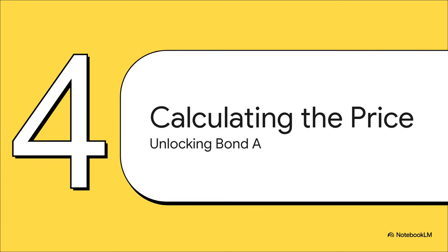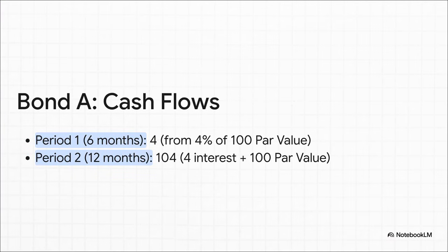We've done all the hard detective work — we found the yield, shaped it to the right period, and we have the right key for the right lock. Now let's calculate the price of Bond A. Bond A has a par value of 100 and an 8% annual coupon paid twice a year, so that's 4% every six months. That means we get a $4 payment in six months, and at the end of the year we get another $4 plus our original $100 back.